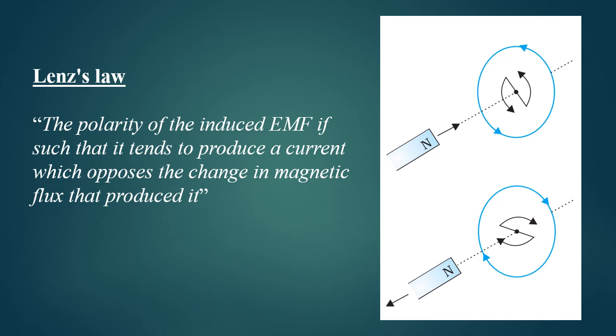The law is stated as: the polarity of induced EMF is such that it tends to produce a current which opposes the change in magnetic flux that produced it.